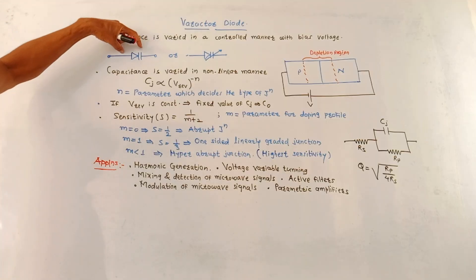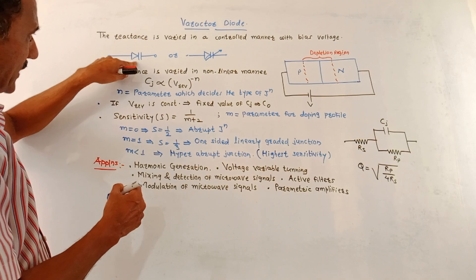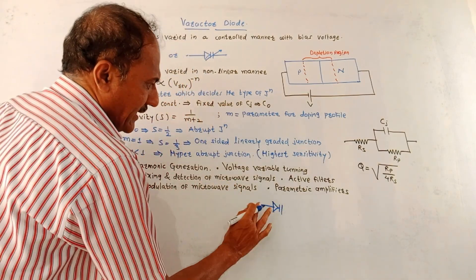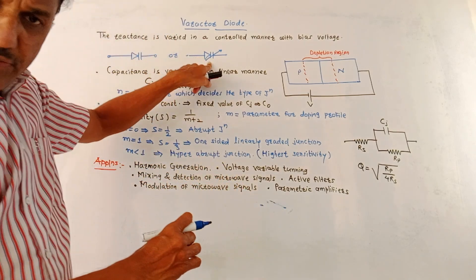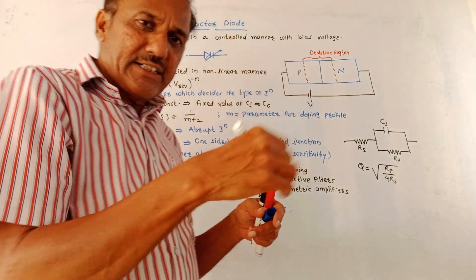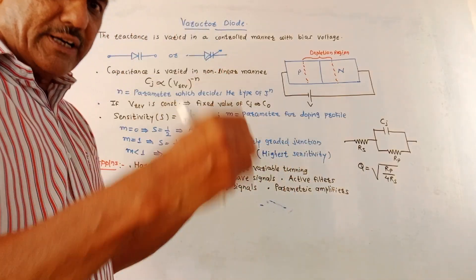This is the symbol of varactor diode. In case of normal diode, we know that the symbol is like this. Here one more vertical line is used. Sometimes the symbol is like this. This arrow indicates that the reactance is variable. So it is called variable reactance diode, variable reactance device.